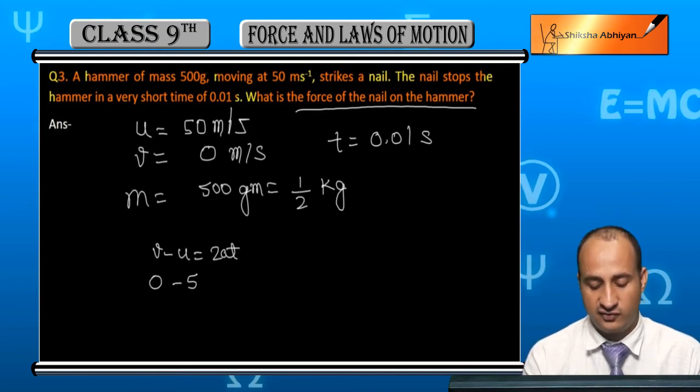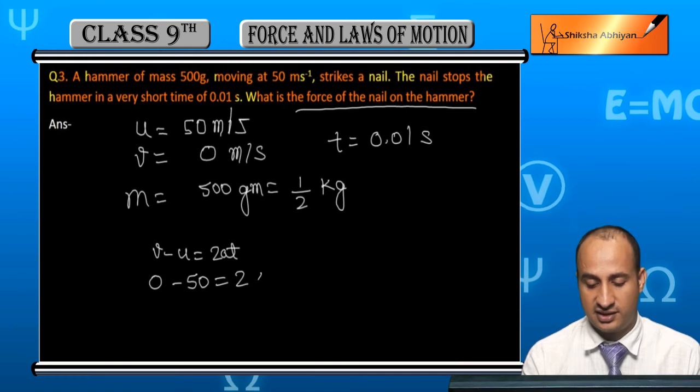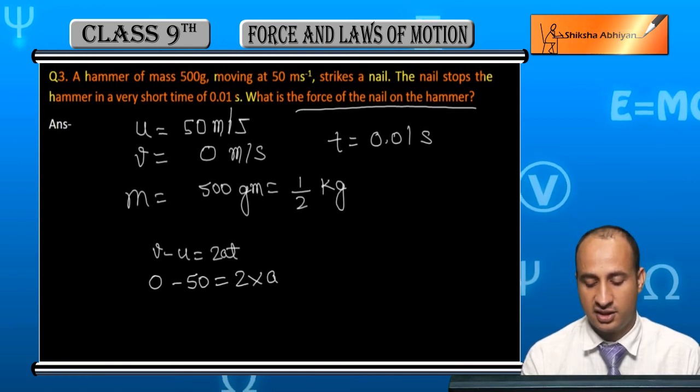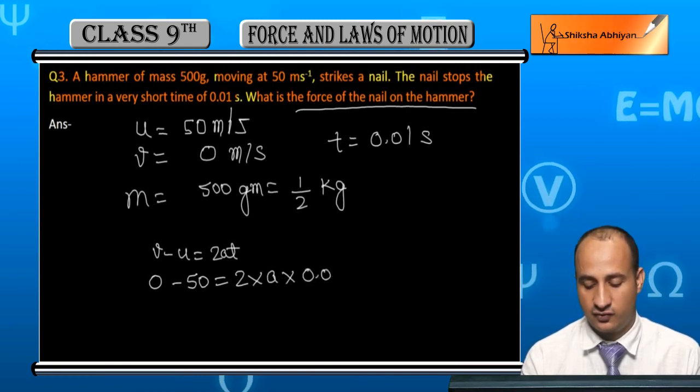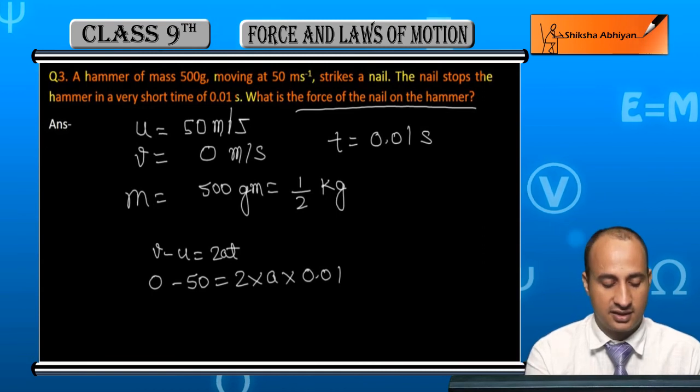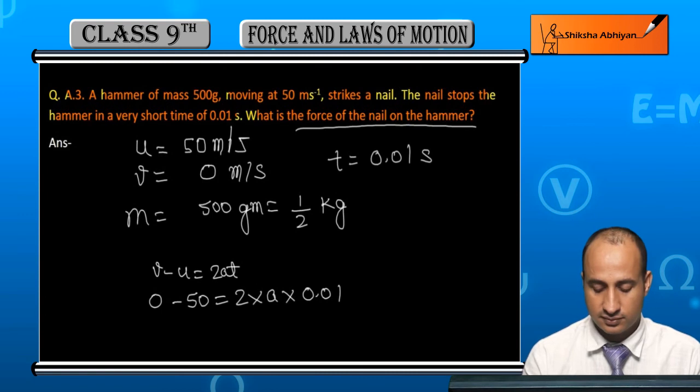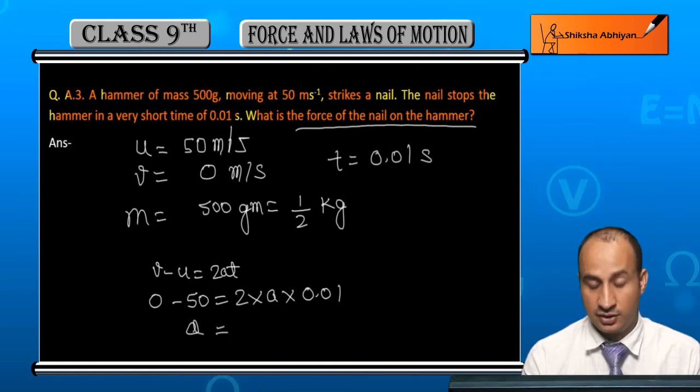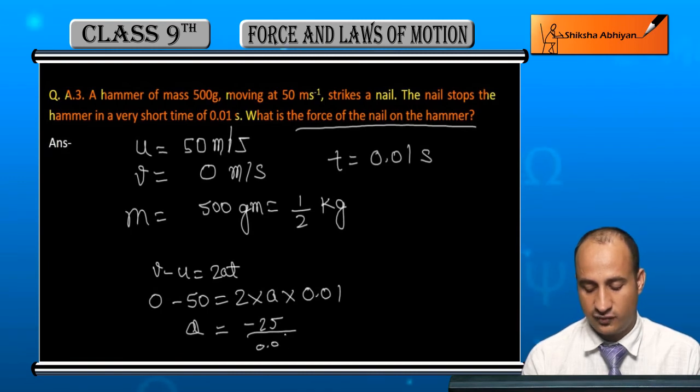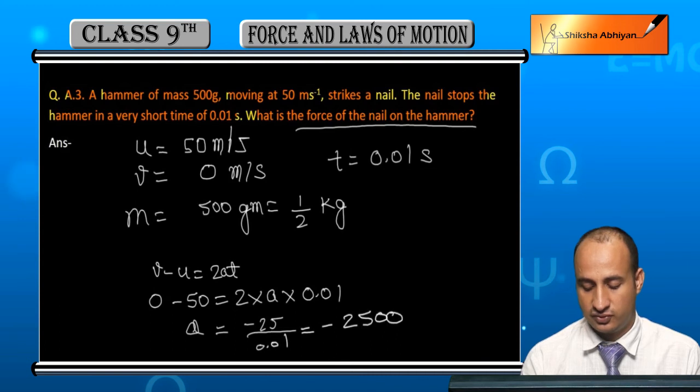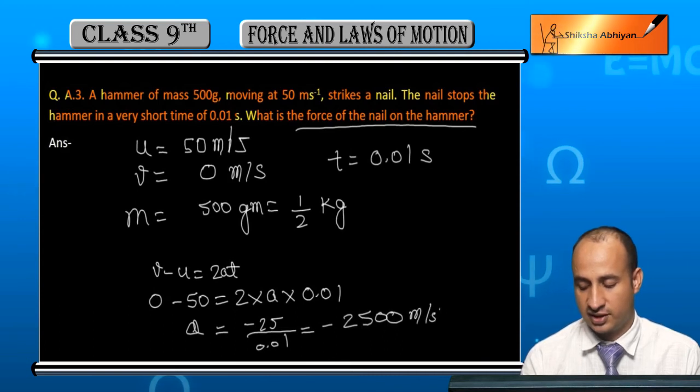Here we have v equals 0, u equals 50, and we need to find the acceleration. Time is 0.01 seconds. The acceleration will be minus 25 by 0.01, which equals minus 2500 meters per second squared.